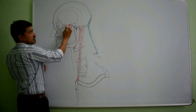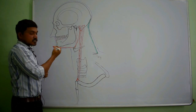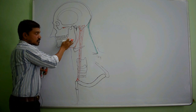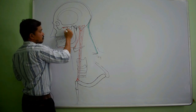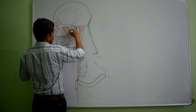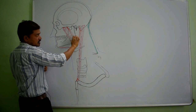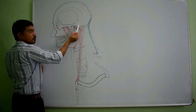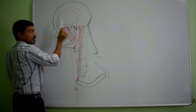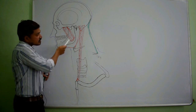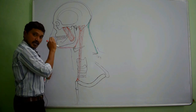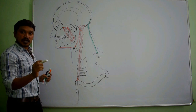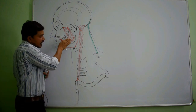The zygomatic arch is visible here. From the inferior border and inner surface of the zygomatic arch, one muscle takes origin and inserts into the outer surface of the ramus of the mandible — that is the masseter muscle. After removing the stylohyoid muscle for convenience, we can easily see the boundaries of the parotid region. Superiorly: the external acoustic meatus and the temporomandibular joint. Anteriorly: the ramus of the mandible along with the masseter muscle outside, and the medial pterygoid muscle on the inner surface.